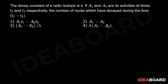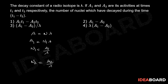We know that activity A equals N lambda. Therefore, A1 equals N1 lambda, which gives N1 equals A1 by lambda. Similarly, N2 equals A2 by lambda. Therefore, N1 minus N2 equals A1 minus A2 by lambda.